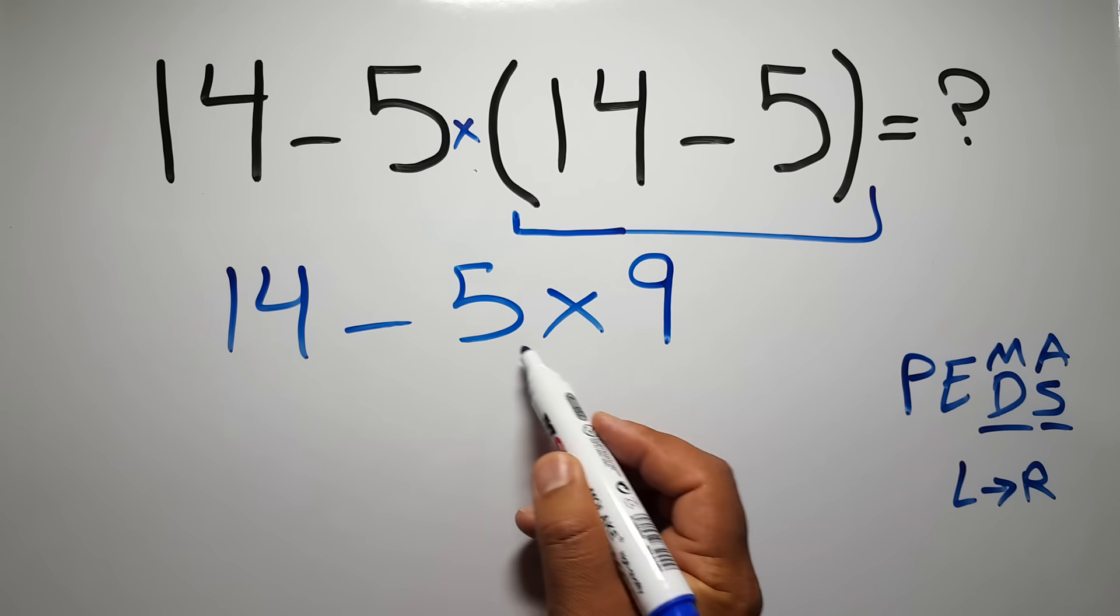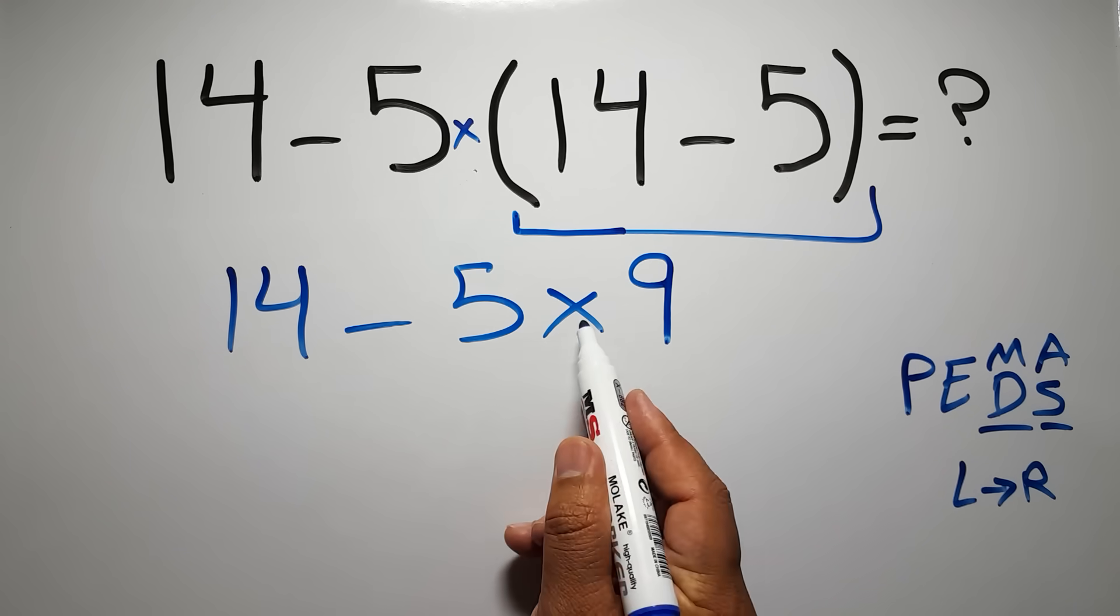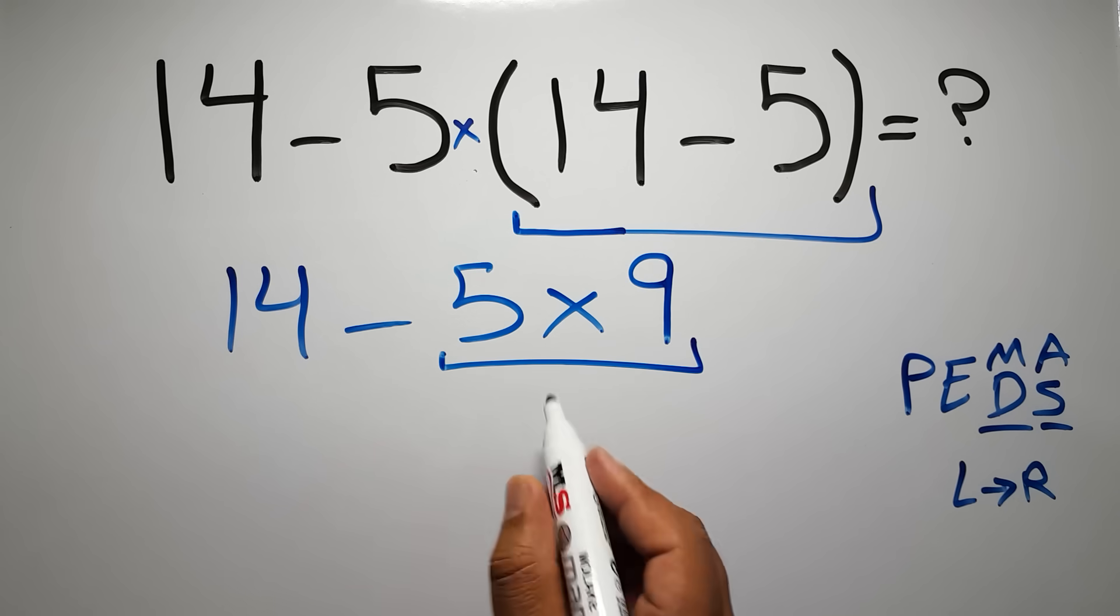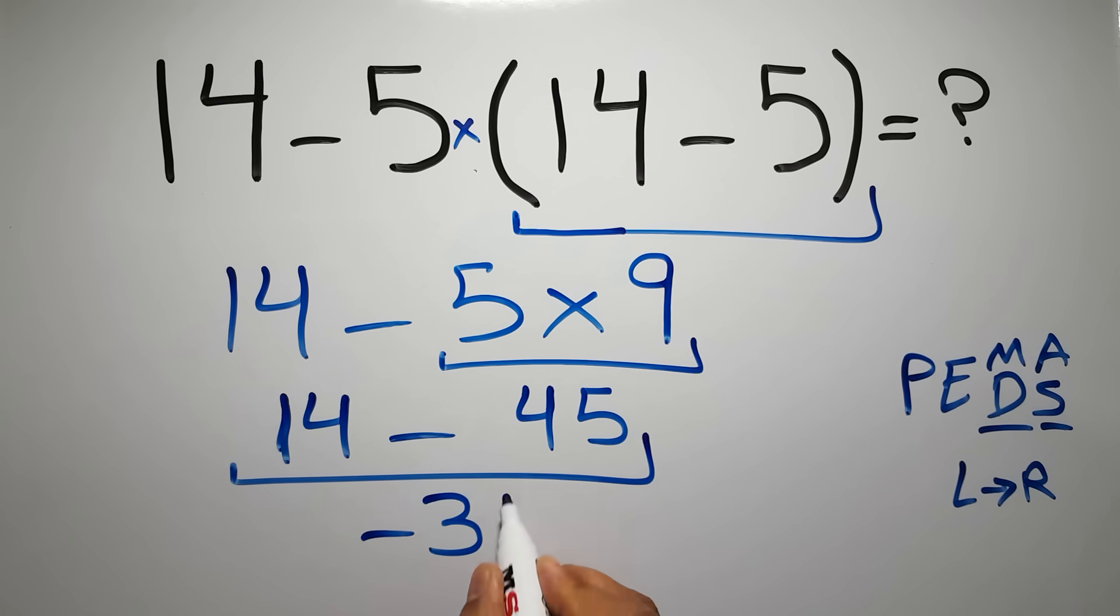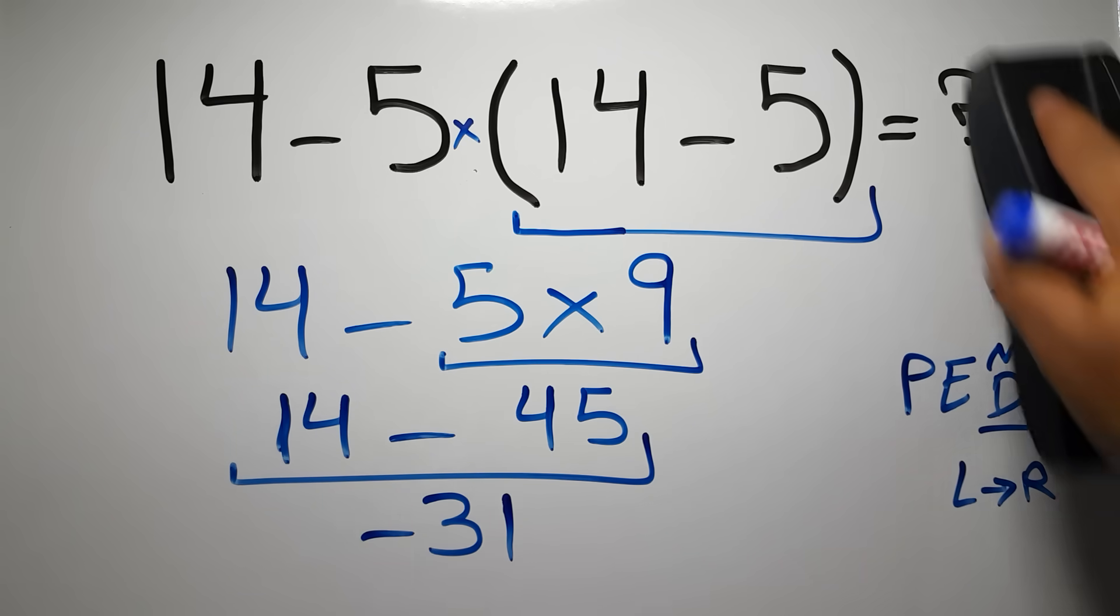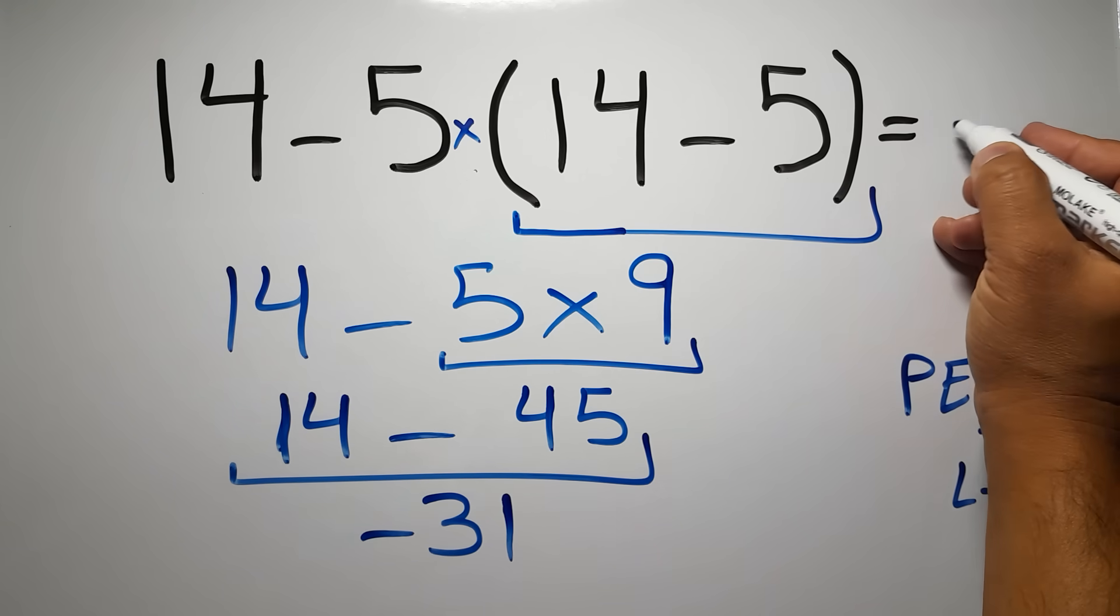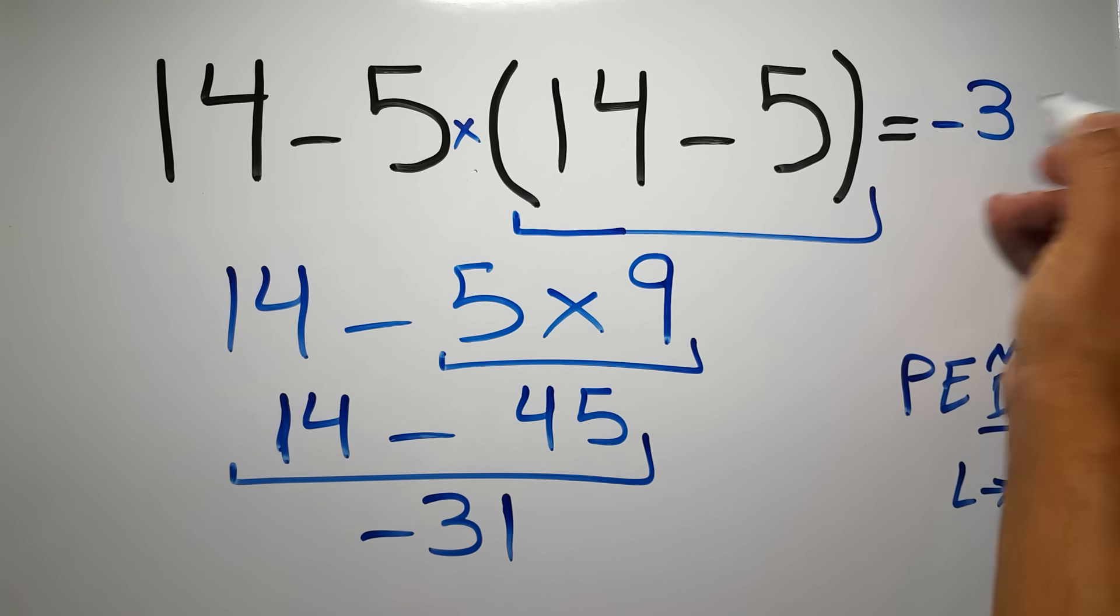So here first we have to do this multiplication. 5 times 9 gives us 45. So we have 14 minus 45, and this is equal to negative 31. This is our final answer to this problem. The correct answer is negative 31.